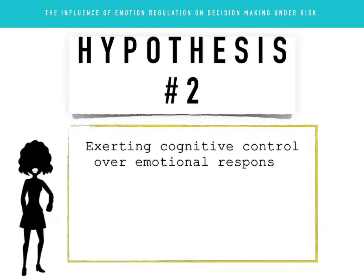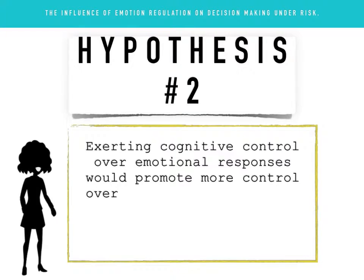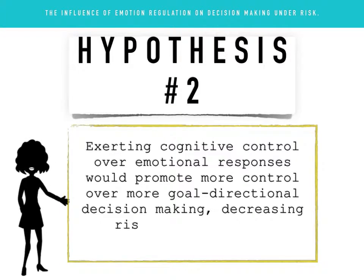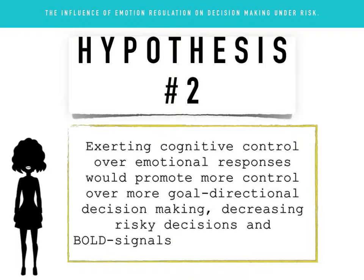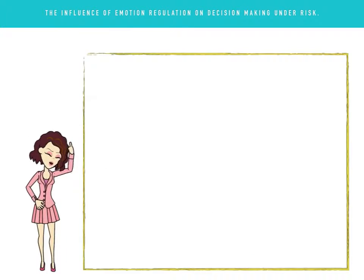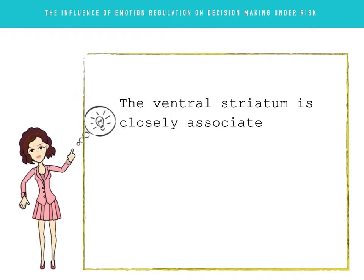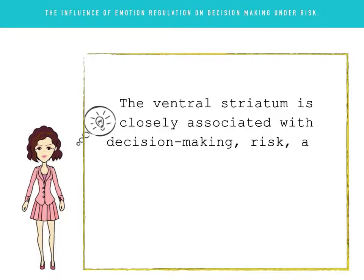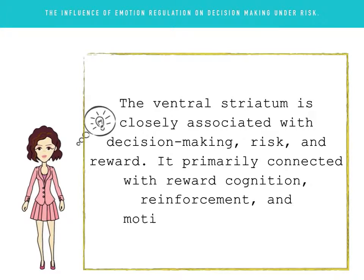Hypothesis 2: Exerting cognitive control over emotional responses will promote more goal-directional decision-making, decreasing risky decisions and BOLD signals in the striatum. The ventral striatum is closely associated with decision-making, risk and reward. It is primarily connected with reward cognition, reinforcement and motivational desires.